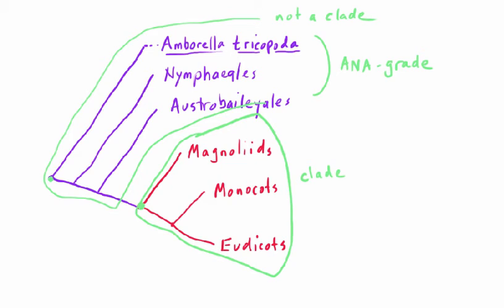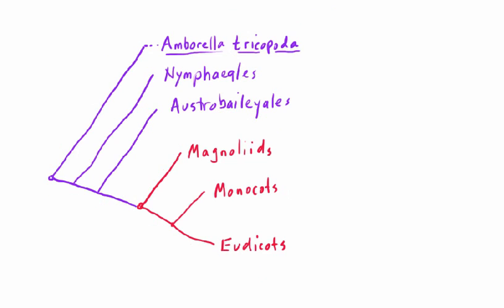Another related concept and term I've been using is the idea of a sister taxon. We can say, for example, that the Austrobaileyales is a sister taxon to the mesangiospermi.